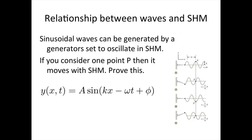In this oscillations topic, we've moved from looking at simple harmonic motion to looking at waves. The relationship is that if we have any point oscillating with simple harmonic motion, then it can generate a sinusoidal wave of the form we've just derived. And not only that, but if we consider any point in the medium as a wave with this wave equation passes, that point undergoes simple harmonic motion. What I want you to do now is prove that for a point P, it is moving with simple harmonic motion.